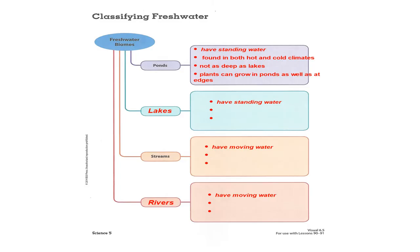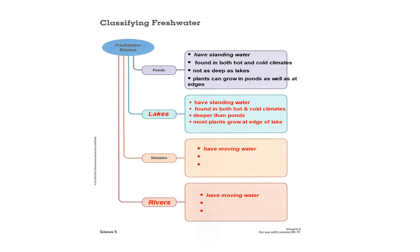On your classified organizer, I've listed four key bullet points for ponds. Ponds have standing water. They're found in both hot and cold climates. They're not as deep as lakes, and plants can grow in ponds as well as at the edge. You may remember the lily pad we talked about that could grow in the middle of a pond. Lakes have standing water also. They're found in both hot and cold climates. Lakes are deeper than ponds, and most of the plants will grow at the edge of a lake.